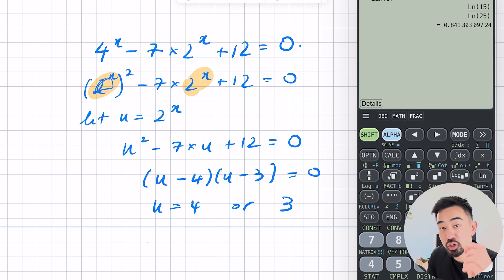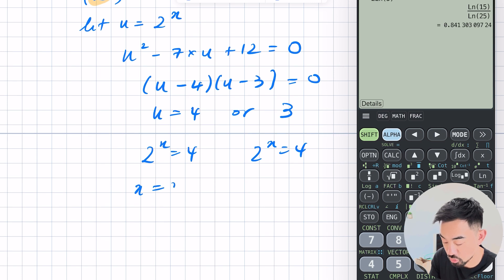But we actually made that up, we made up the u equal to 2 to the power of x. So we've got to bring that back. Now 2 to the power of x equals 4 simple. So x is just 2. For this one just a little bit more work. Log both sides. Power down. So x is equal to ln 3 over ln 2. And we'll just leave it exact for that one.